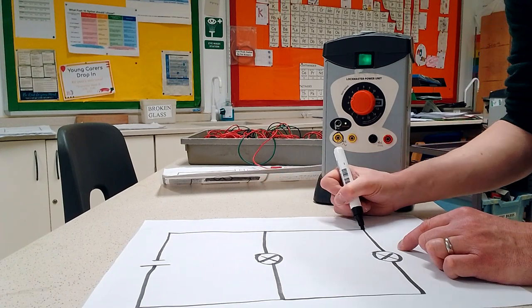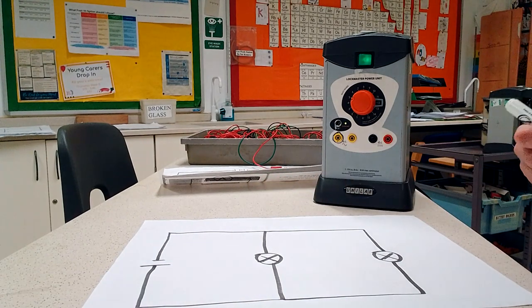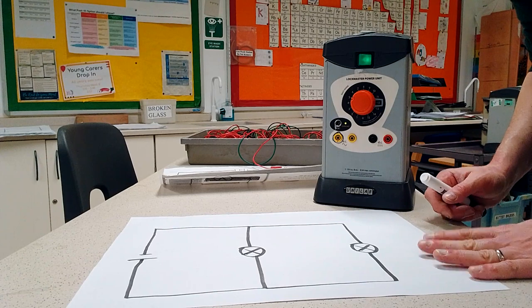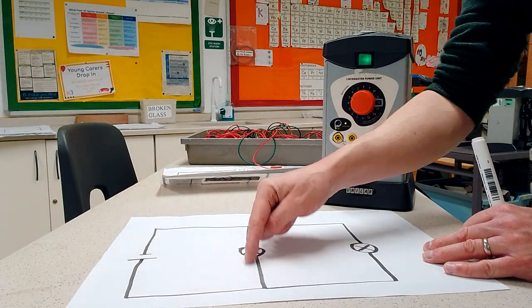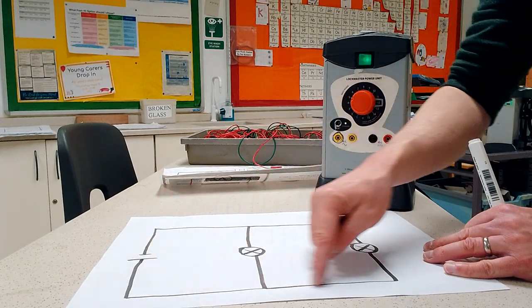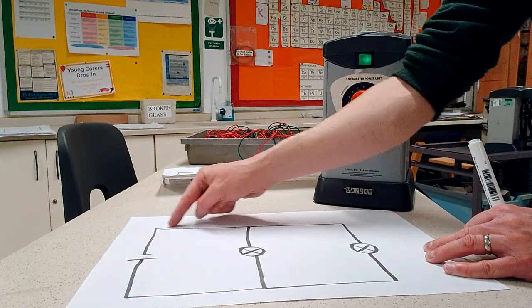This is what we call a parallel circuit. That's because there's two separate routes here through the circuit. I've got the route going this way through one bulb, and I've got the route going this way through the second bulb here.